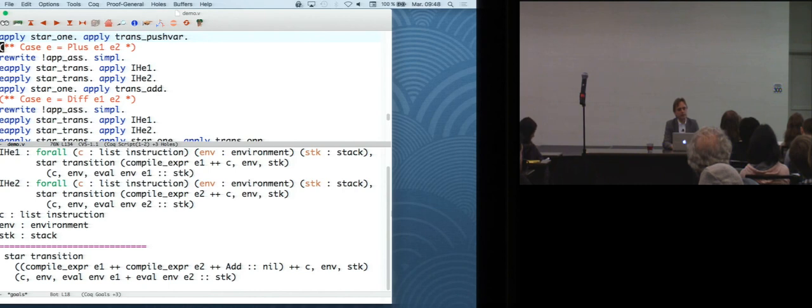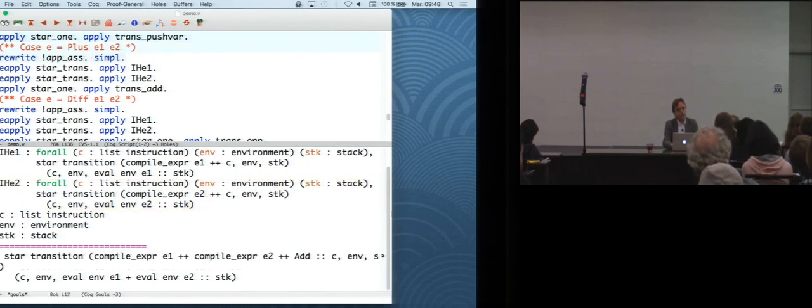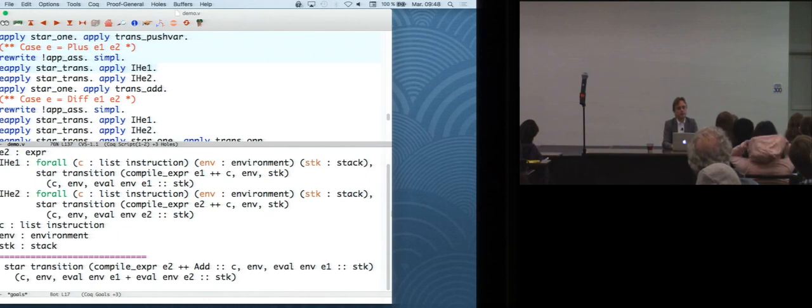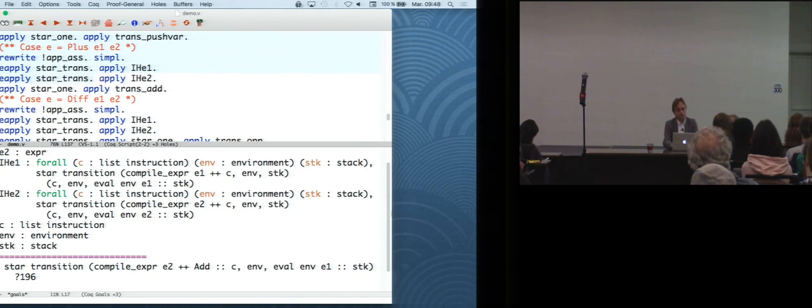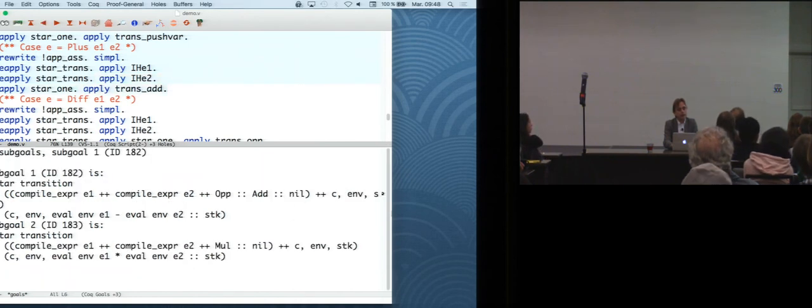And now comes the slightly more involved cases about compound expressions. So here, since I'm doing an induction, Coq is giving me, as hypotheses, the result I want to show, specialized for my two sub-expressions, e1 and e2. And so now, basically, I can take advantage of that by noticing that the first induction hypothesis tells me something about executing code that starts with compile expr e1, and I have some code like that. So I can do some transitions that will consume the code for e1 and leave me in this intermediate state. And then I can do some more transitions by using the second induction hypothesis that will consume, execute the code for e2. And in the end, I only have to do add instruction, and I'm done.